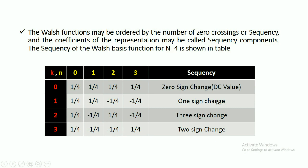The Walsh functions may be ordered by the number of zero crossings, which is called sequency. The coefficients of the representation may be called sequency components or zero crossing components. The sequency of the Walsh basis function for N=4 is shown in the table, with k values 0, 1, 2, 3 and n values 0, 1, 2, 3. Using the 1D Walsh transform formula, we can compute the values for each k and n combination.